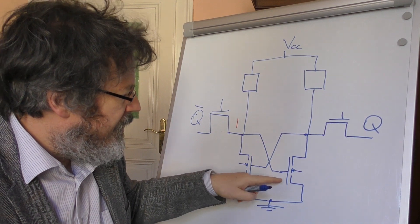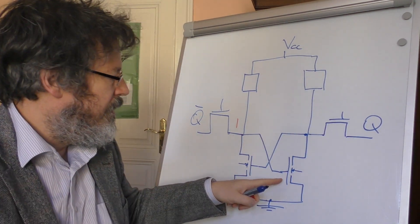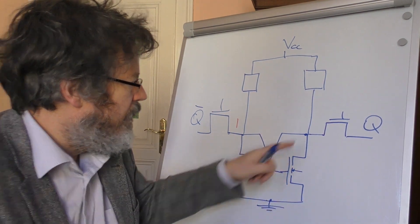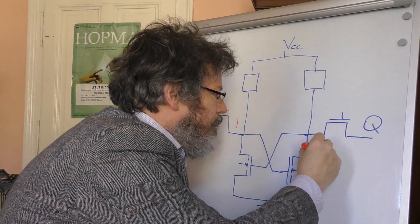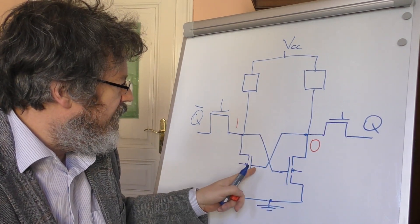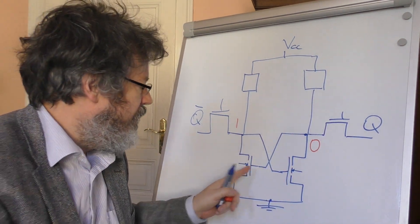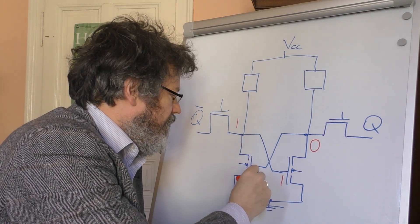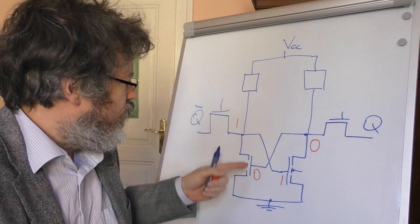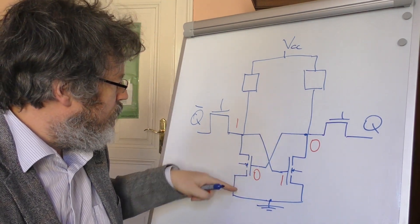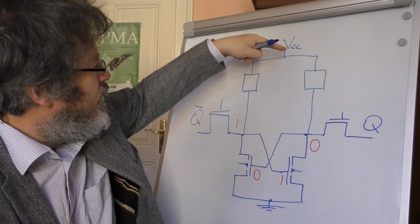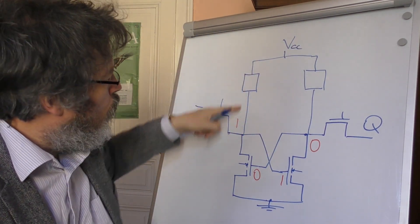So let's assume a state 1 comes in here, a high potential. Then this high potential at this gate—it's an NMOS transistor—will switch it, a connection between ground and here will be established. That means a low potential will be present at this output. This low potential is then also present at this gate here. Here is a 1, here is a low potential. A low potential at the gate of an NMOS transistor blocks this transistor.